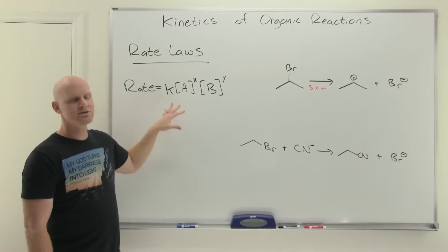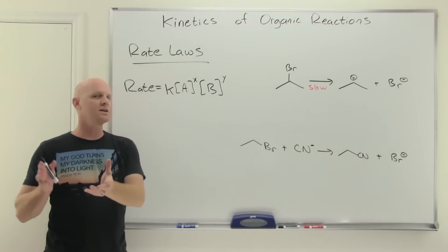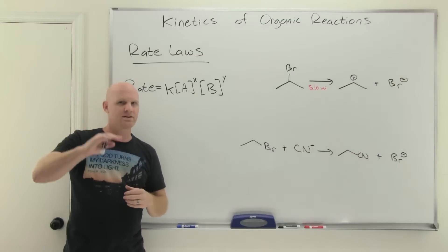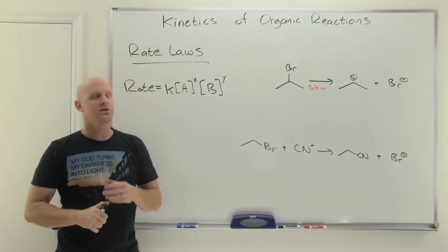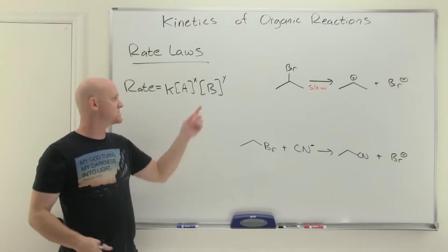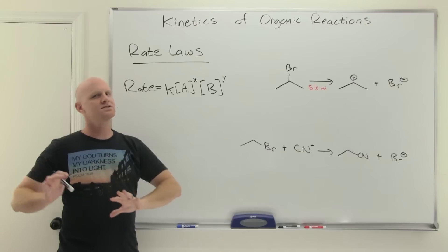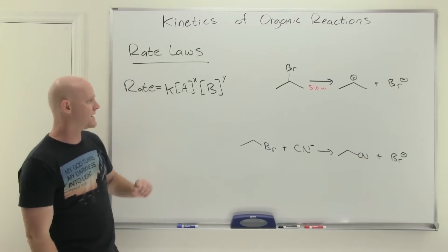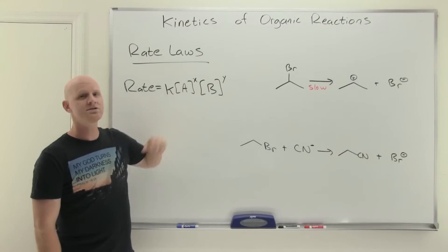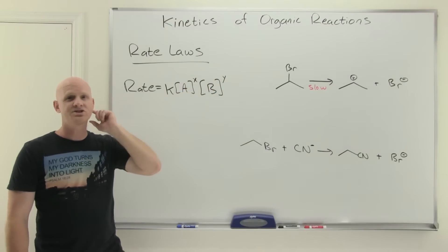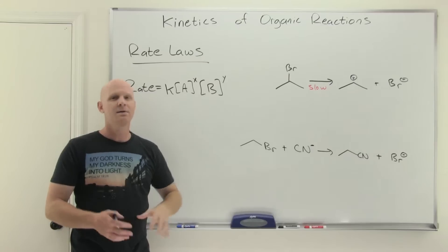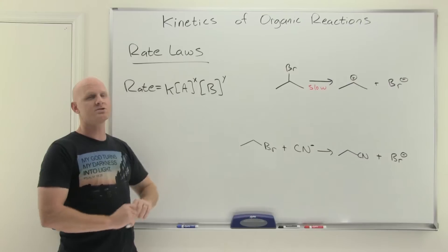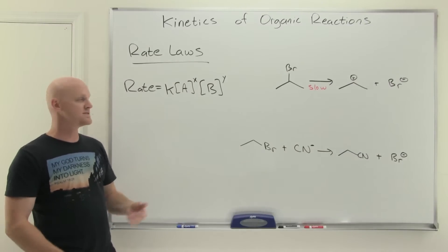For organic chemistry, your rate laws are going to be a lot simpler than what you would have seen in general chemistry. In your GenChem class, they might have given you kinetic data and had you figure out the orders. In OChem, we'll hit this on more of a surface level — the orders are going to be integers. That's the only ones you'll see. And recall from GenChem that these orders don't necessarily have to be the coefficients in an overall reaction.